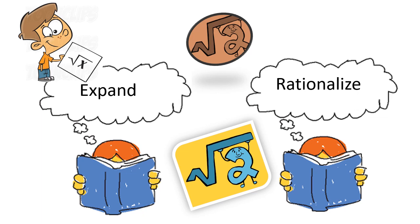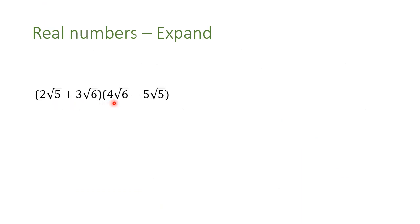In this video we are going to take a brief revision about expanding, and then move on to how to rationalize a denominator. For expanding, we have this expression. First, we multiply 2 radical 5 by 4 radical 6, which is the first number in the second parenthesis, and also by the second number.